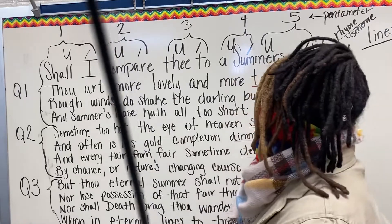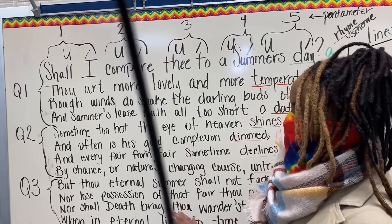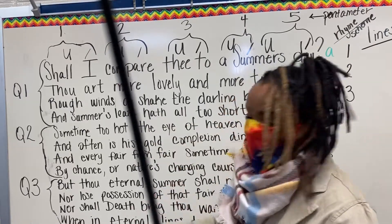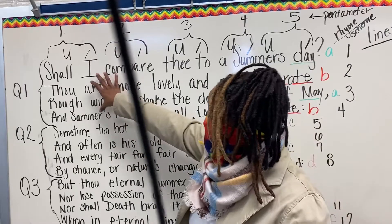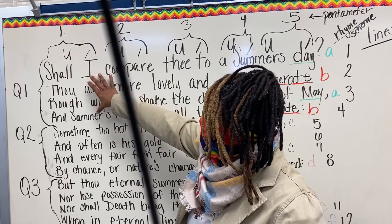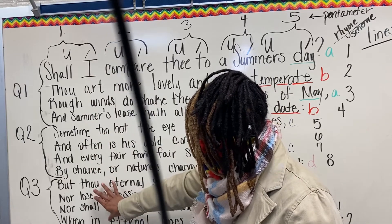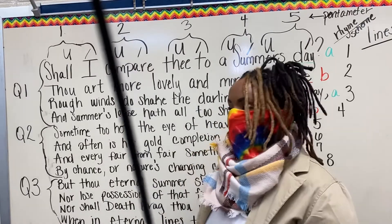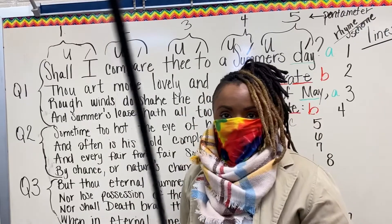So here we have Sonnet 18. As you can see, it's broken down into three quatrains and a couplet. Now a quatrain is simply four lines. So as you see right here, you have four lines here, four more lines here, four lines here, and then you end with what's called a couplet — because a couple is two — and you end in two lines.